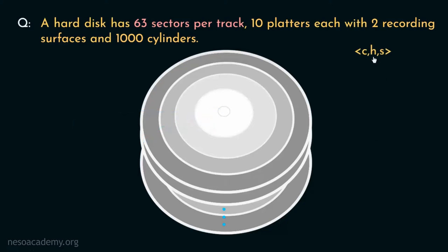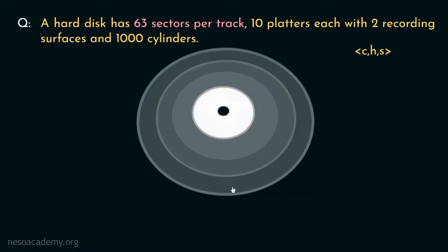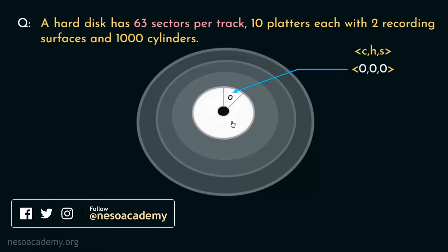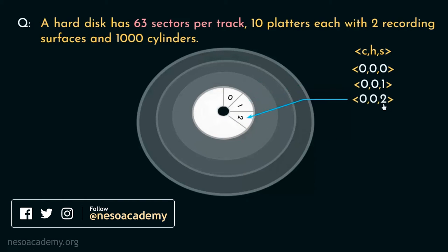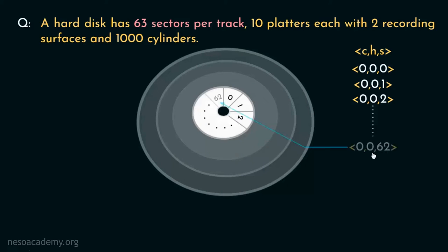The triple is C, H, and S, where C is the cylinder number, H is the surface number, and S is the sector number. Observing a single platter: sector 0,0,0 is the first sector — it's on the zeroth cylinder and the zeroth surface. Sector 0,0,1 addresses the second sector, and 0,0,2 the next. Since there are 63 sectors per track, the last sector on this surface is 0,0,62, because 0 to 62 is 63 sectors total.